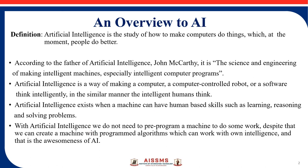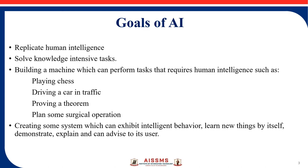So, all these are the overview of Artificial Intelligence. What are the goals regarding AI? It replicates human intelligence, solves knowledge-intensive tasks, and involves building a machine which can perform tasks that require human intelligence, such as playing chess, driving a car in traffic, or proving a theorem.